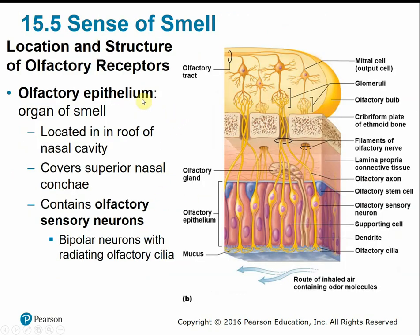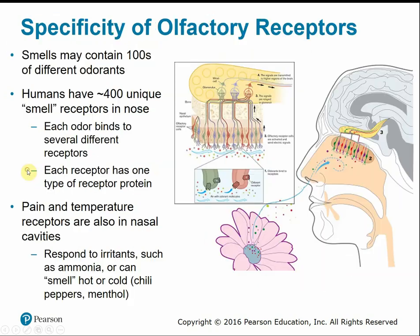The olfactory epithelium is the organ of smell, located in the roof of the nasal cavity. It contains olfactory sensory neurons, which are bipolar neurons with radiating branching olfactory cilia to increase surface area for picking up stimuli. Particular smells can contain hundreds of different odorants or particles. We have about 400 unique smell receptors in the nose, and each odor binds to a different receptor.